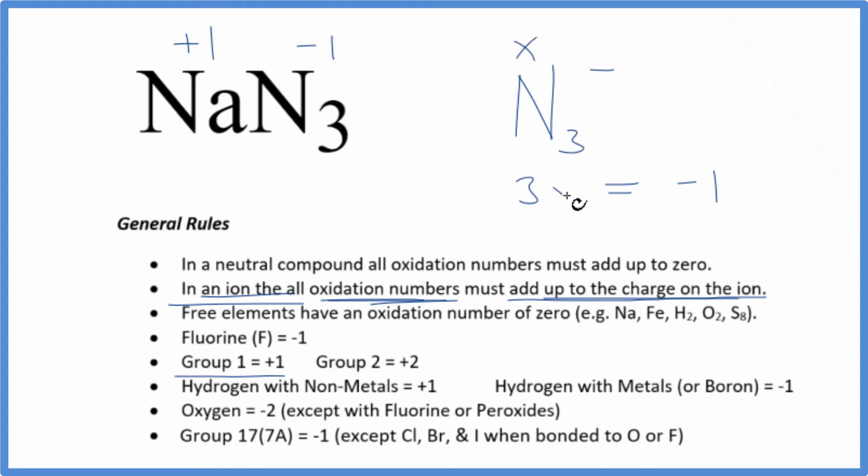So we have 3 times x, or 3x, equals -1. Divide both sides by 3, and we get -1/3. So the oxidation number on each nitrogen is -1/3 in the azide ion. Overall, all the oxidation numbers on N3-, the azide ion, add up to -1.